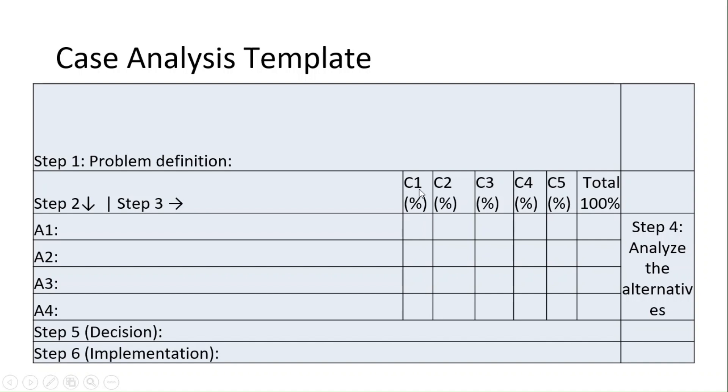C is step three, which is criteria. You have here five criteria, but you might have more or less criteria depending on the case.